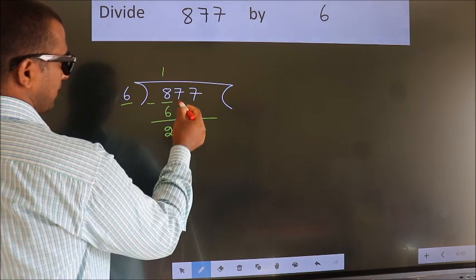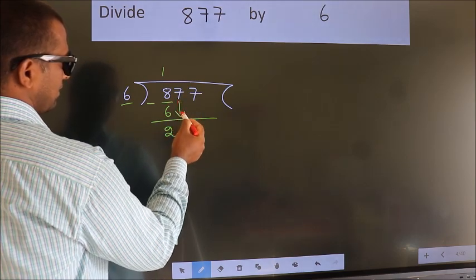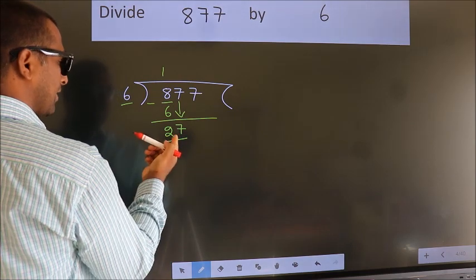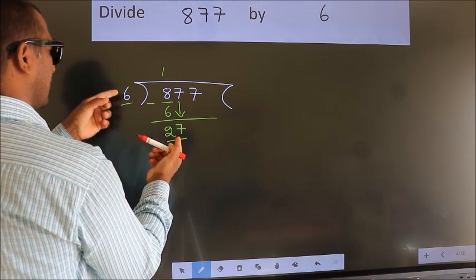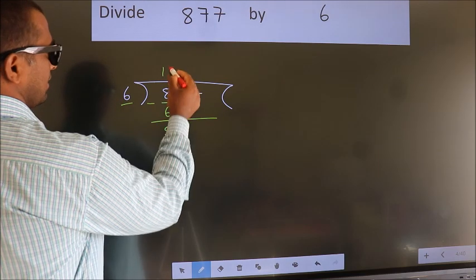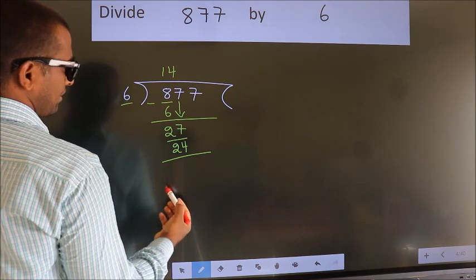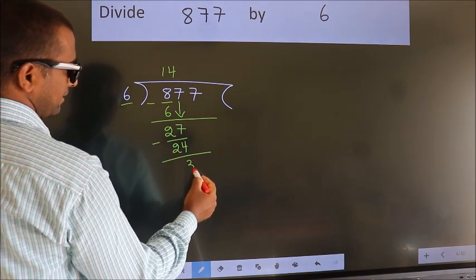After this, bring down the beside number. So 7 down, giving us 27. A number close to 27 in the 6 table is 6 fours 24. Now we subtract. We get 3.